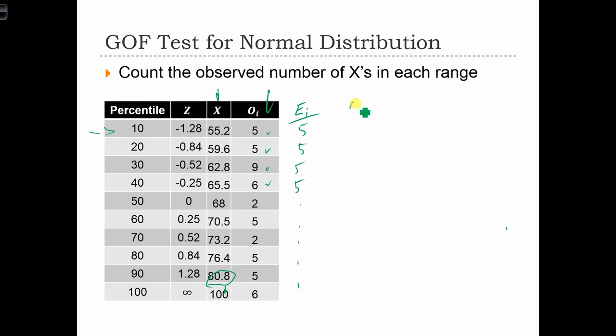And now we have to do oi minus ei, 0, 0, 4, 1, minus 3, 0, minus 3, 0, 0, 1. And square it, oi minus ei squared, 0, 0, 16, 1, 9, 0, 9, 0, 0, 1. And divide that by ei, so we have to put it over 5. oi minus ei squared over ei.